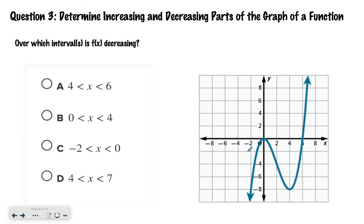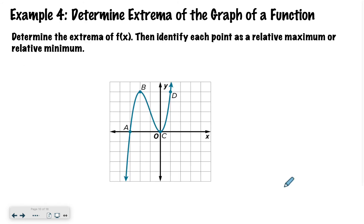Go ahead and try to figure this one out: over which interval or intervals is f(x) decreasing? Remember, always go left to right, and find where this graph is decreasing. Hopefully you said letter B — the interval where it's decreasing is from 0 to 4, written as 0 is less than x is less than 4. That section of the graph is highlighted in purple.